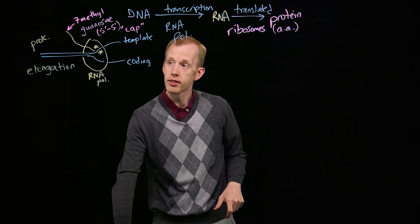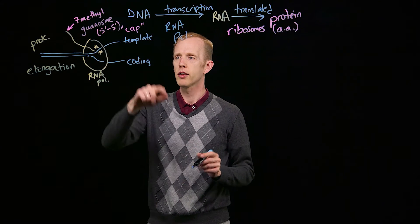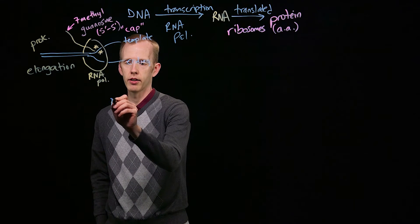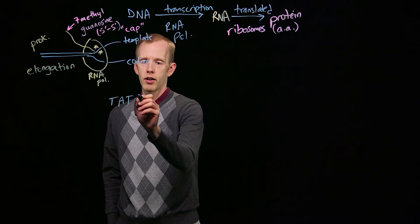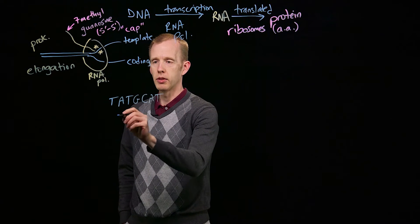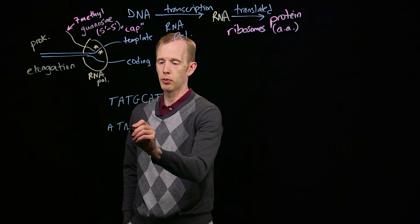The next step in this process would be RNA polymerase moves along the template strand. Let's say that the template strand has this sequence, and that would mean that the coding strand of DNA is its complement, as we know.